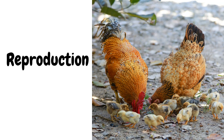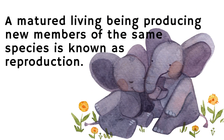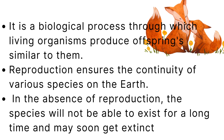Now let's discuss about reproduction. A matured living being producing new members of the same species is known as reproduction. It is a biological process through which living organisms produce offspring similar to them. Reproduction ensures the continuity of various species on the earth. In the absence of reproduction, the species will not be able to exist for a long time and may soon get extinct.